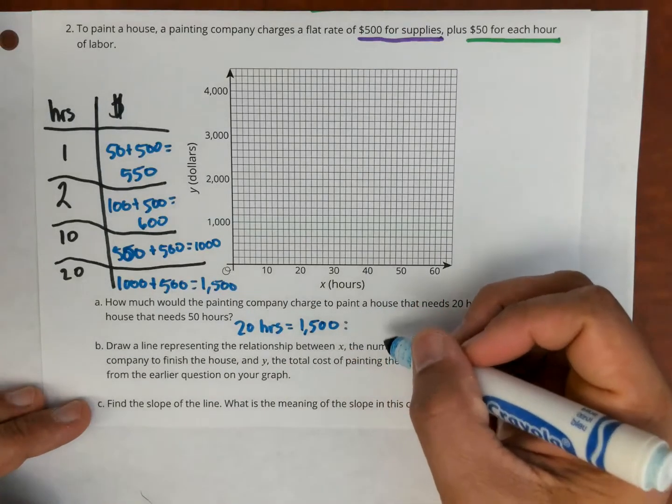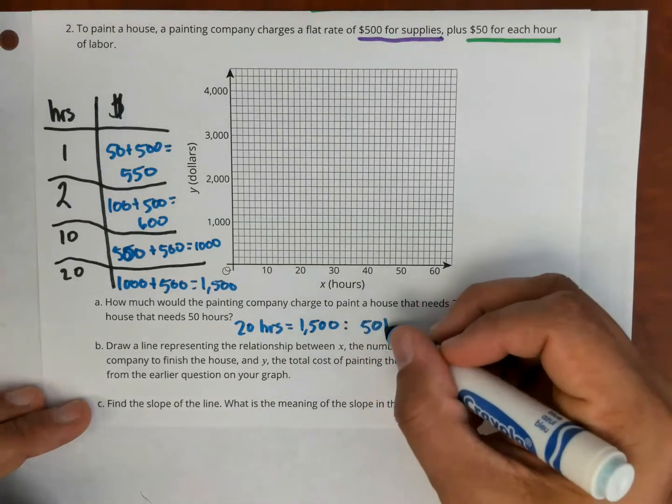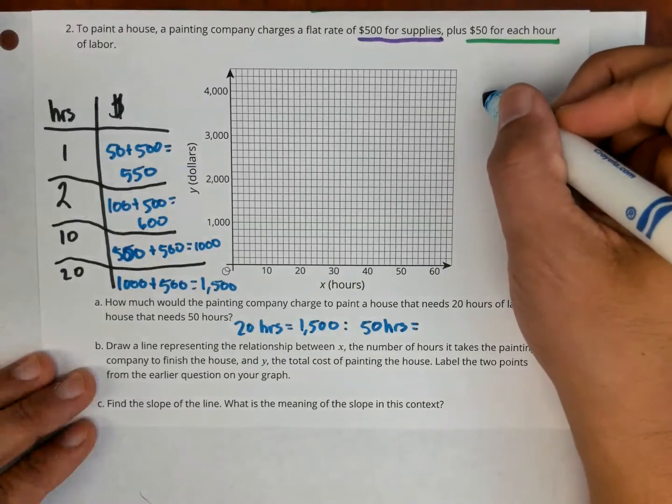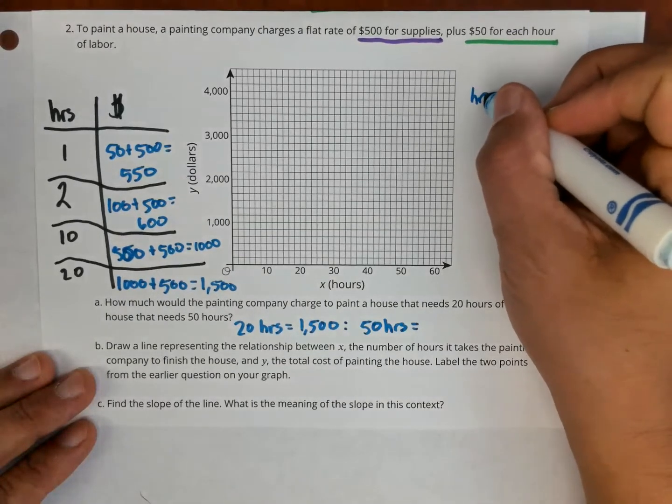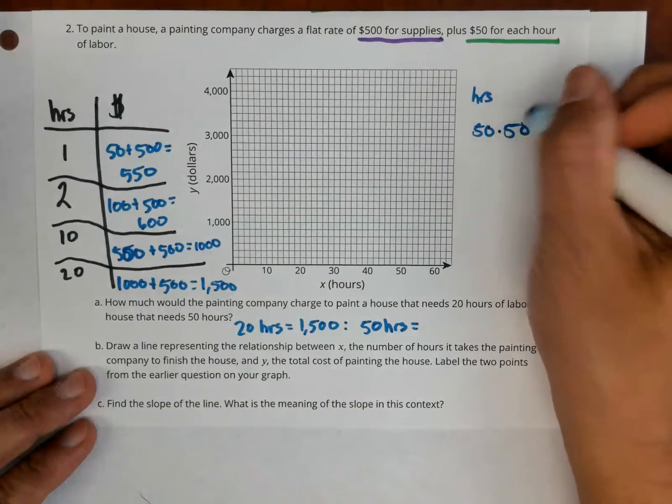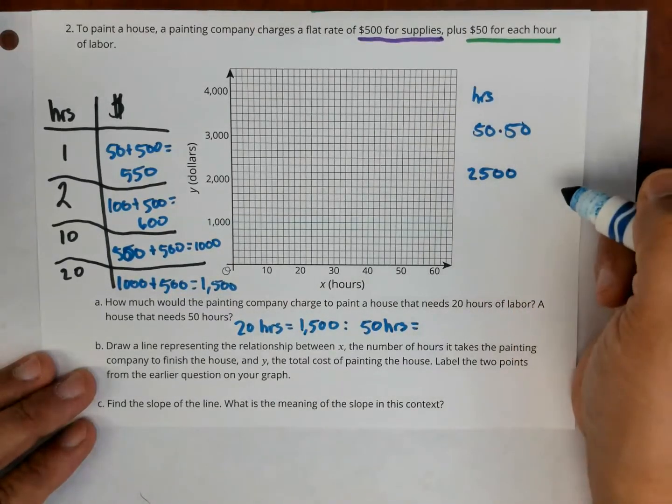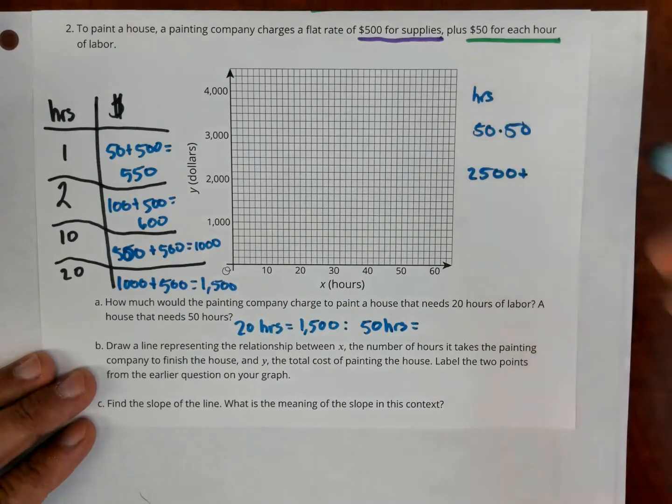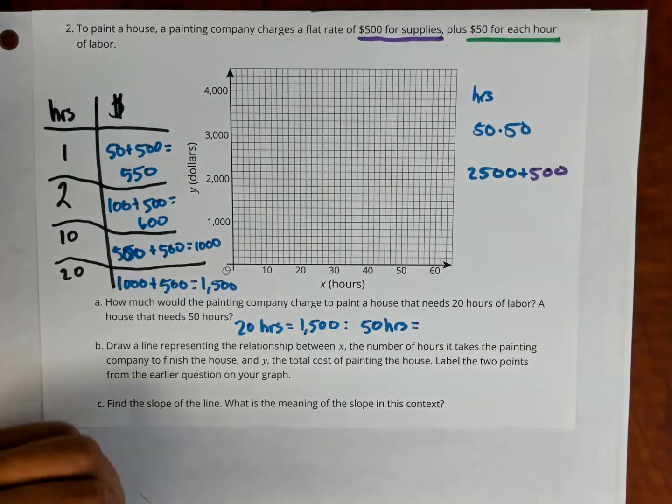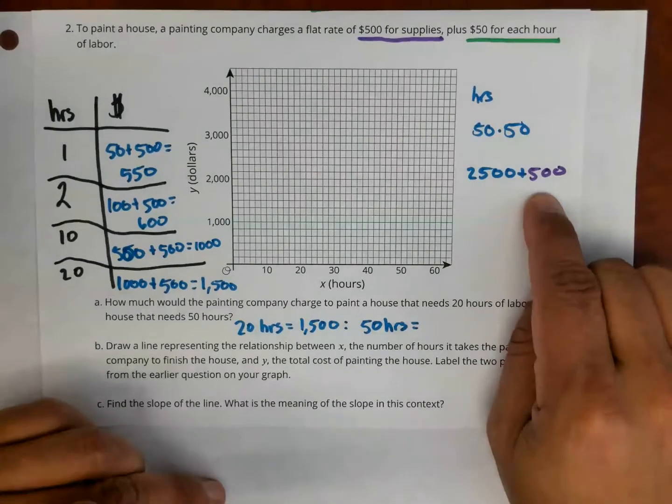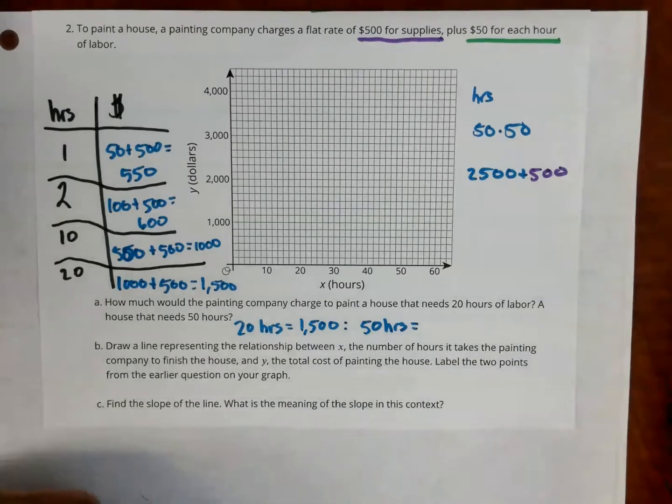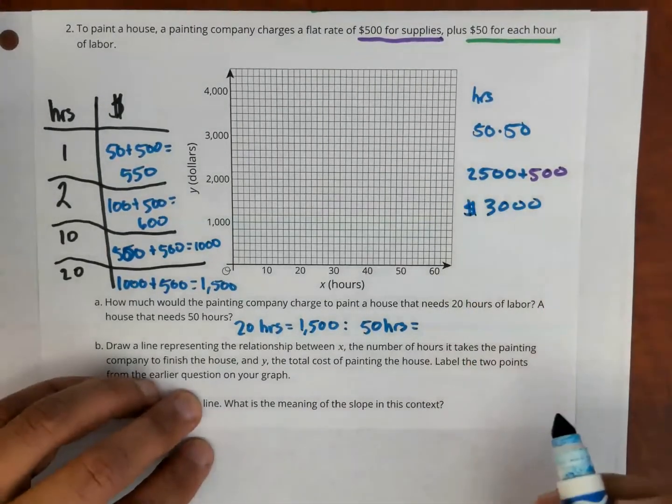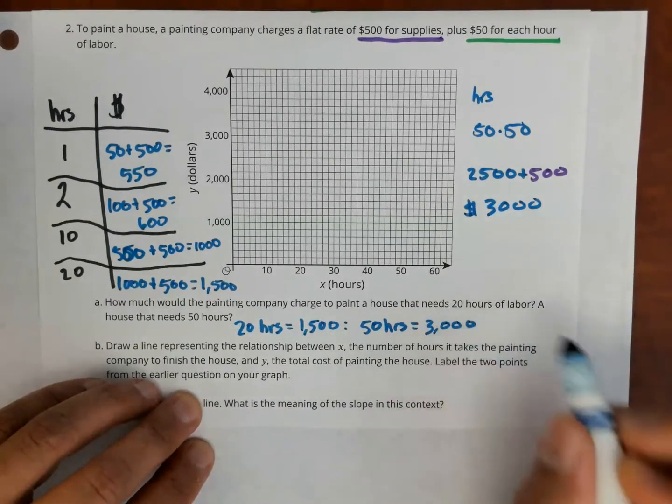So to do 50 hours, I'm going to calculate the same pattern. For 50 hours, it's going to be 50 times 50, because it's $50 every hour, that's $2,500 plus the supplies. The supplies are $500. So I add this and I get $3,000.